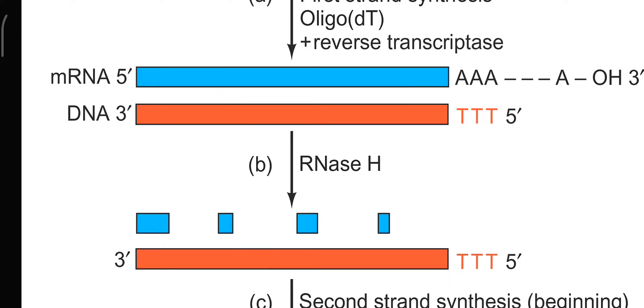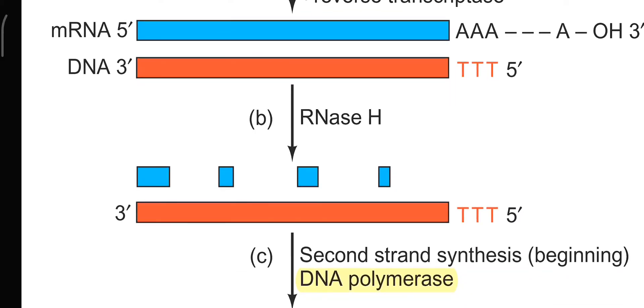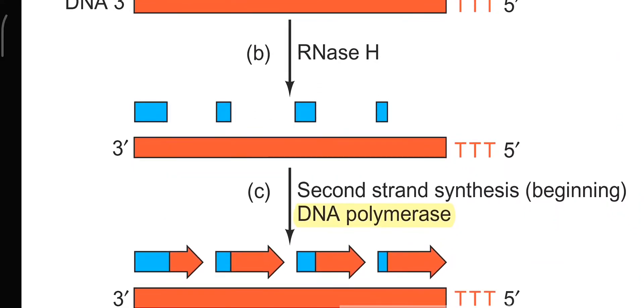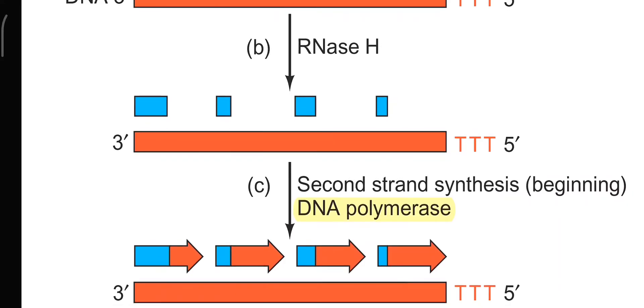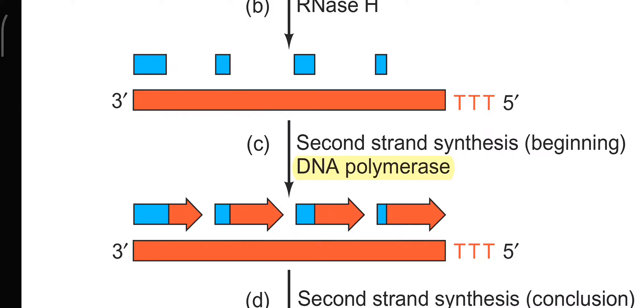We use this enzyme partially so that it cuts out most of this RNA-DNA hybrid, leaving a few of them still that can be used for the primer, used by this DNA polymerase enzyme that will synthesize these DNA fragments.